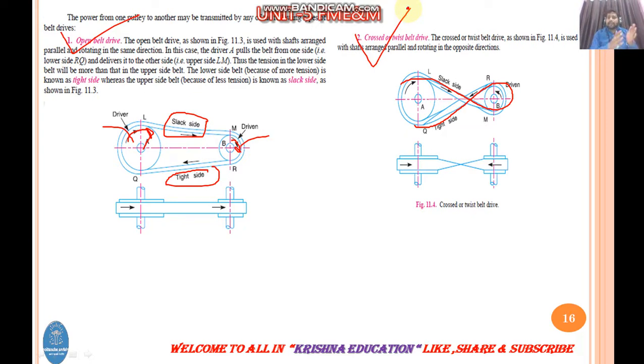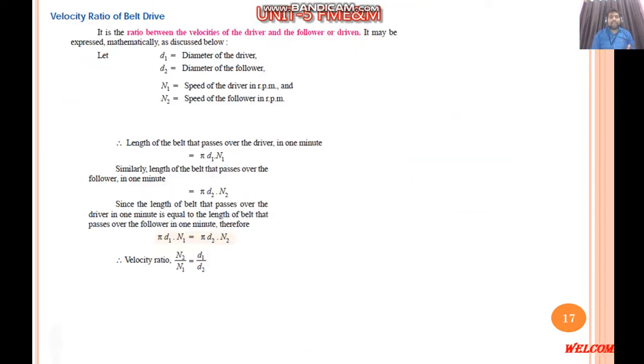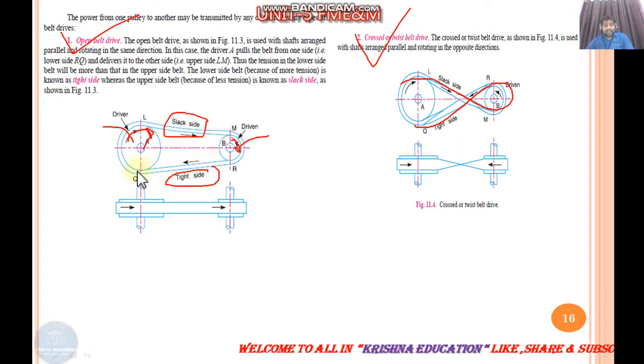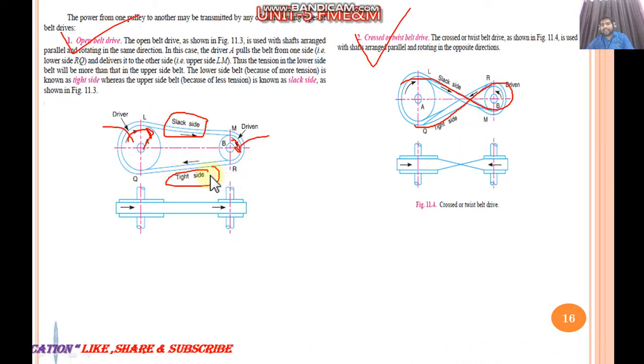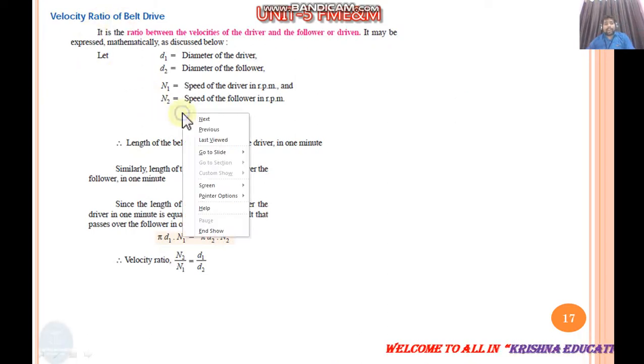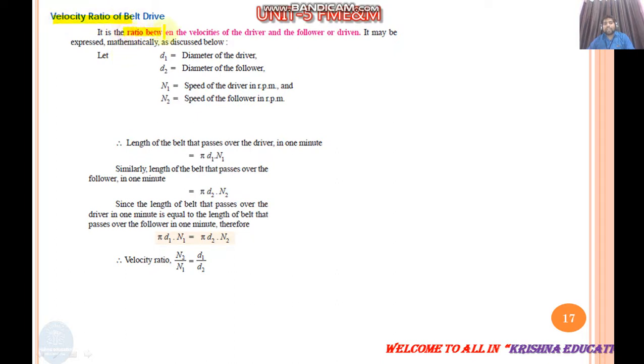One more concept is velocity ratio of the belt. When belt passes, what logic should we apply, what velocity to keep? The amount of belt that slides below, that much belt is transferred above. Below belt depends on pi d1. What is velocity ratio? If you are asked what is velocity ratio of belt, it is the ratio between velocity of driver and driven. The ratio of speeds is called velocity ratio, denoted by Vr. N2 upon N1, the ratio of speeds is called velocity ratio, denoted by Vr. That is called velocity ratio of belt drive.